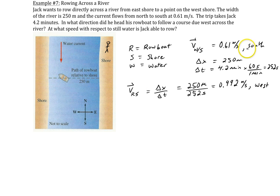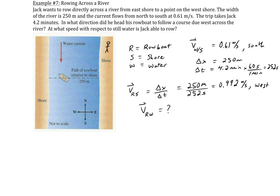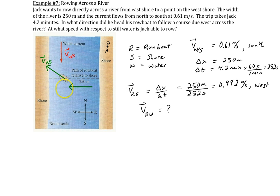So we really have two velocities: the velocity of the water with respect to the shore, and the velocity of the rowboat with respect to the shore. In this question, we're asked to determine what direction he headed his rowboat, so we need to find the angle. And we need to find what speed the boat was going with respect to still water — that is, the velocity of the rowboat with respect to the water. We need to organize these vectors into a vector diagram. We have the velocity of the water, the boat angling off, and the velocity of the rowboat with respect to the shore going directly west. This vector is the velocity of the rowboat with respect to the shore, while this one is the velocity of the rowboat with respect to the water.